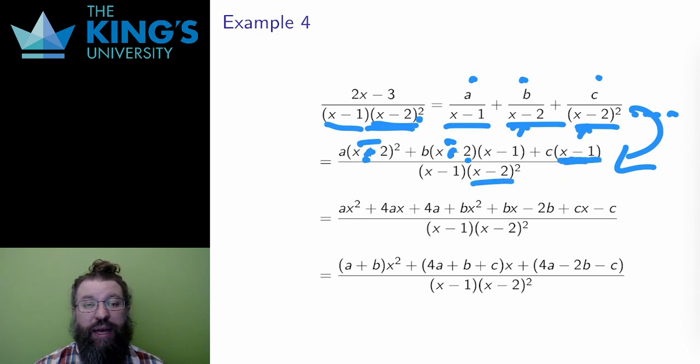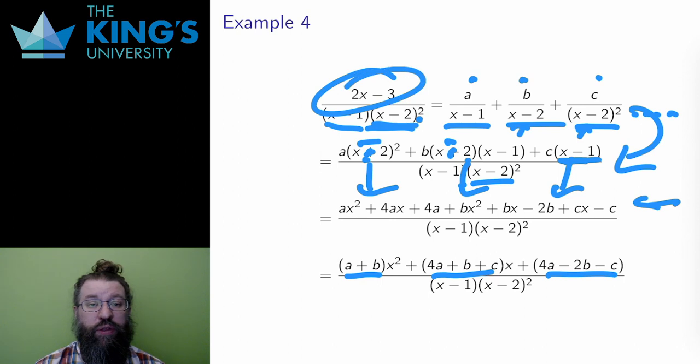Then I expand the multiplications of the binomials and the numerators to get these eight terms. I group the terms into their polynomial coefficients, x squared, x, and constants. Then I restrict to the numerators, since the denominators are the same.